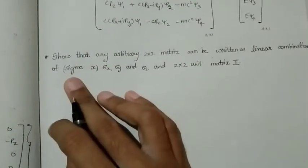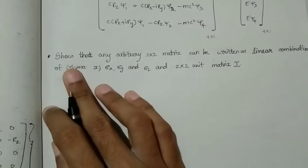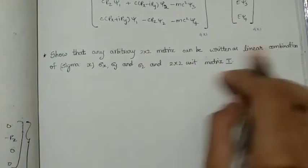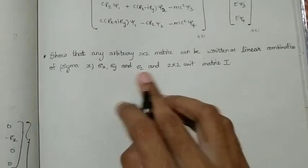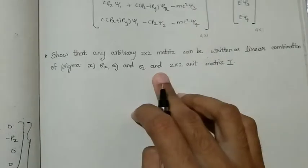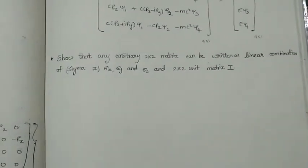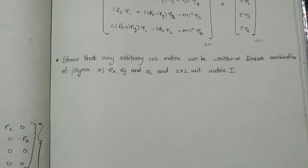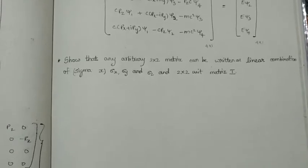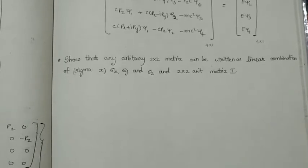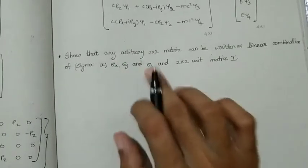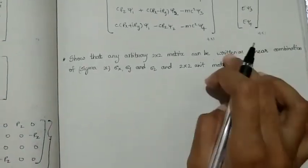Let's see this problem: show that any arbitrary 2×2 matrix can be written as a linear combination of Sigma X, Sigma Y, Sigma Z — the Pauli spin matrices — and a 2×2 unit matrix. According to the question, we need to prove that any 2×2 matrix can be expressed as a linear combination of these matrices, including the Pauli spin matrices Sigma X, Sigma Y, Sigma Z as well as the identity matrix.